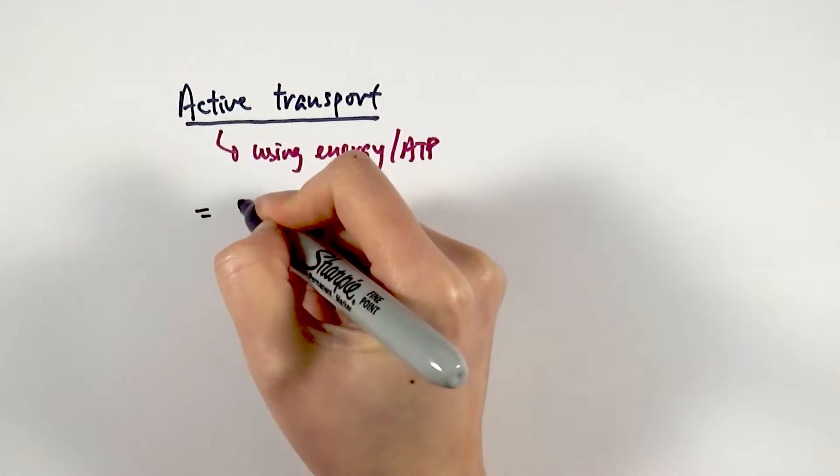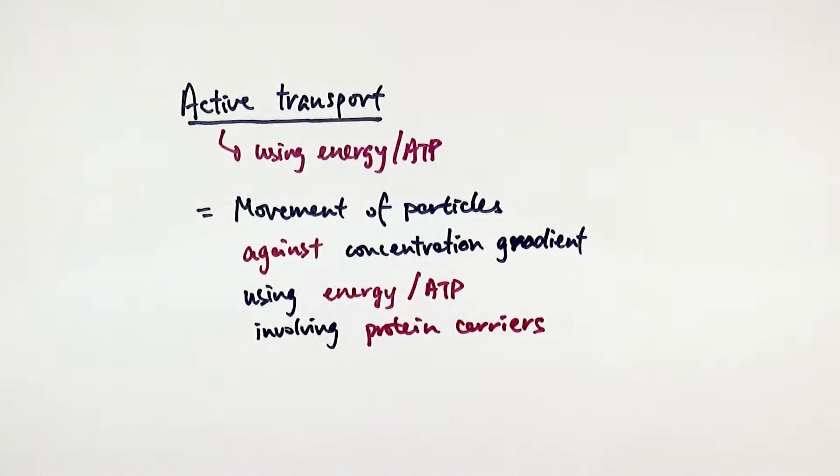Definition of active transport is the movement of particles against the concentration gradient using energy in the form of ATP and usually involving a protein carrier.